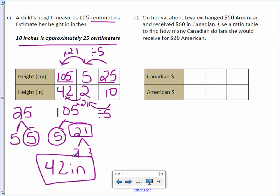Letter D. On her vacation, Leah exchanged $50 American and received $60 Canadian. Use a ratio table to find how many Canadian dollars she would receive for $20 American.